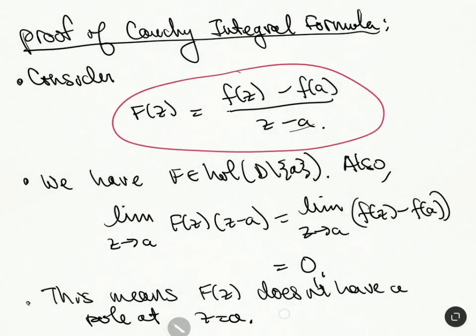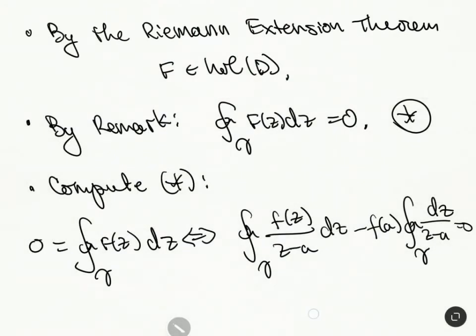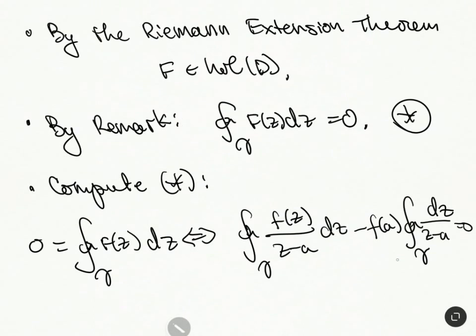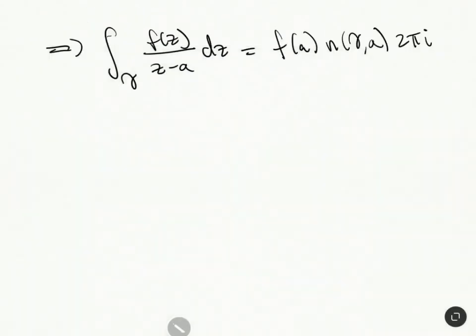Okay, and this formula here tells us that. So it's 2 pi i. Because that's the, this part here is the definition of the winding number. 1 over 2 pi i times this is the winding number. So this is the winding number times 2 pi i.